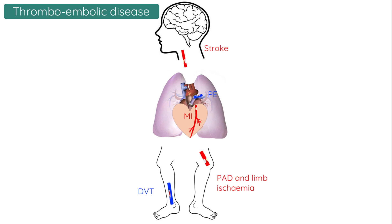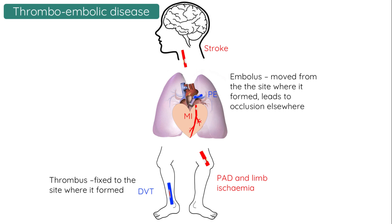A blood clot can be accurately referred to as either a thrombus or a thromboembolism. A thrombus is a blood clot that has formed and remains fixed at the site in the blood vessel, whereas a thromboembolism detaches from the original site of formation and migrates, leading to an occlusion elsewhere in the circulation.